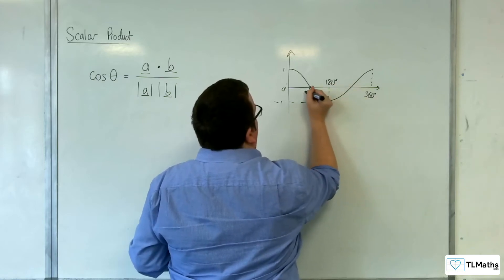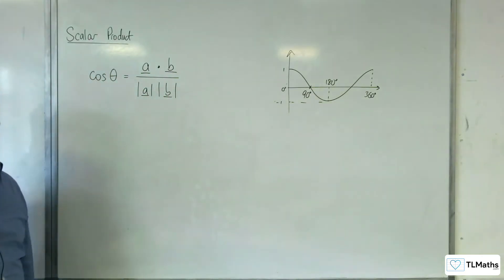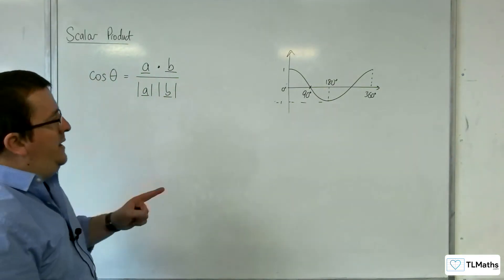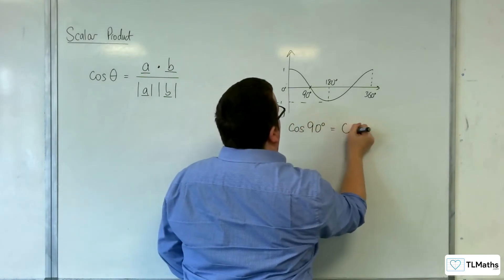And this point is really the one that we're interested in at 90 degrees. So we know that cosine of 90 degrees is equal to 0.